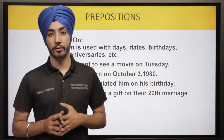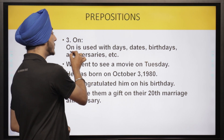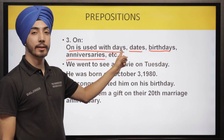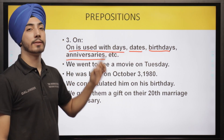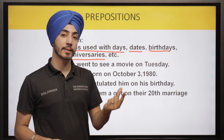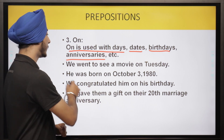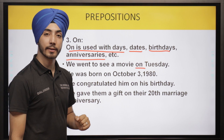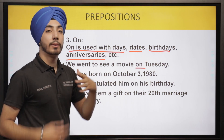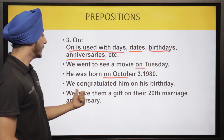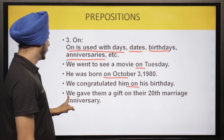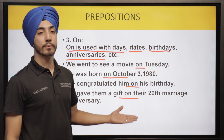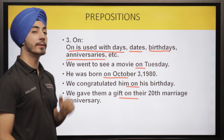The next preposition is 'on.' On is used with days, dates, birthdays, and anniversaries. We use it with particular dates and with birthdays and anniversaries. For example, 'Mahatma Gandhi was born on the 2nd of October.' Examples: 'We went to see a movie on Tuesday.' 'He was born on October 3rd, 1980.' 'We congratulated him on his birthday.' 'We gave them a gift on their 20th marriage anniversary.' So 'on' is used with days, dates, birthdays, and anniversaries.